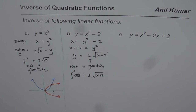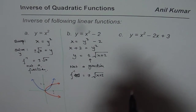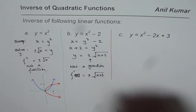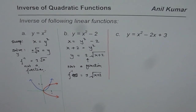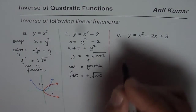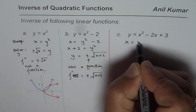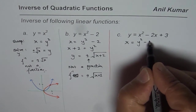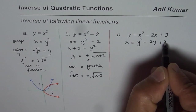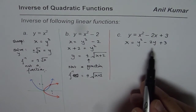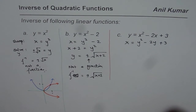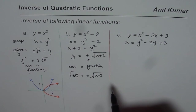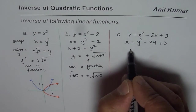In the last example, y equals x squared minus 2x plus 3. Swapping x and y is simple — you get x equals y squared minus 2y plus 3. In such a case it is very difficult to isolate y directly, so completing the square is the right method.